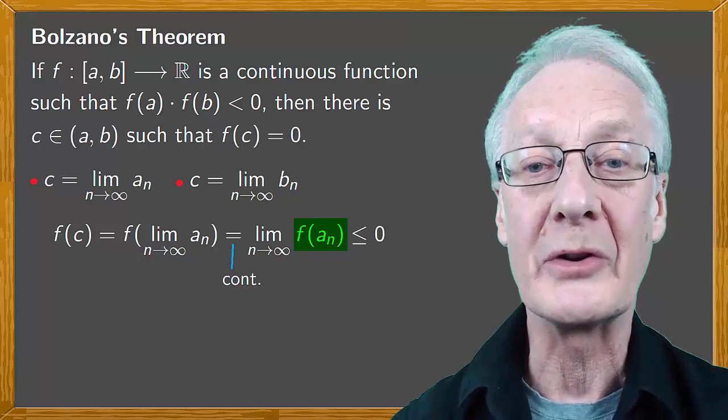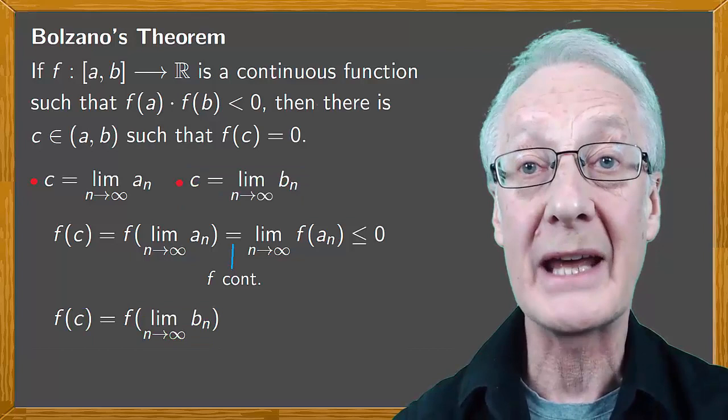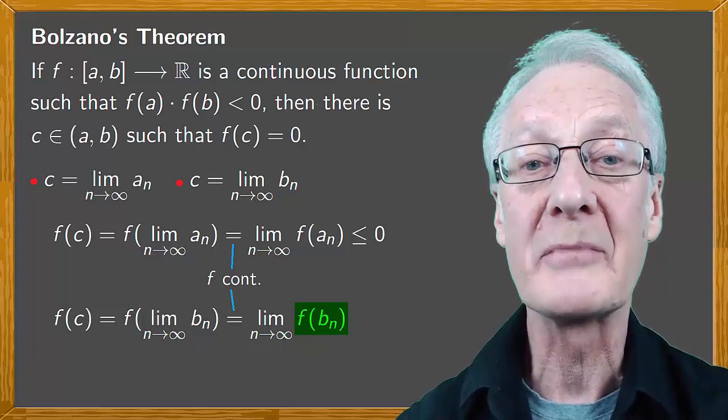In the same way in the second case we'd have that f(c) is f of the limit of bᵢ and again by continuity the limit goes out, and these images are positive so we have the limit where it exists of a succession of positive values is greater than or equal to 0.